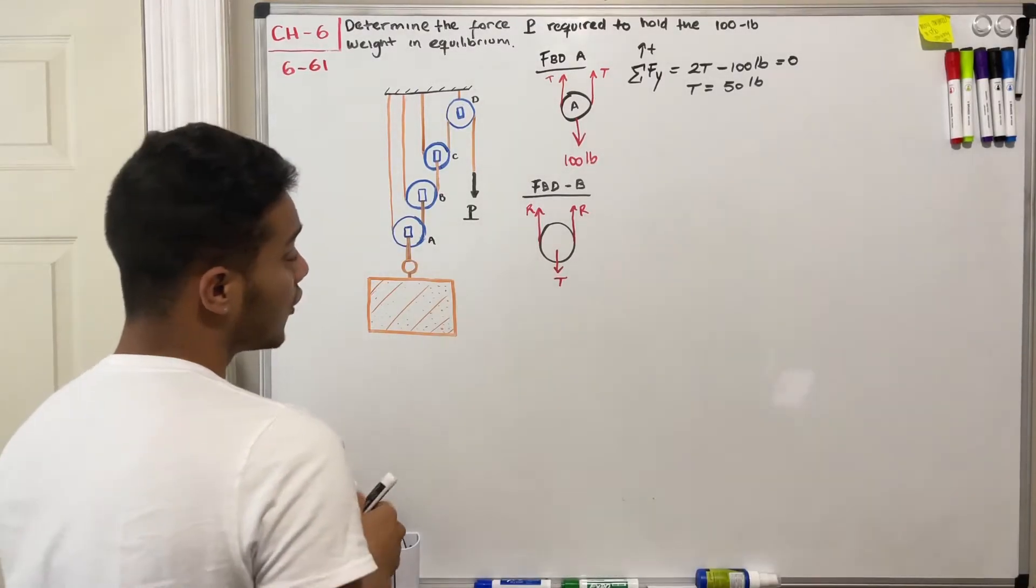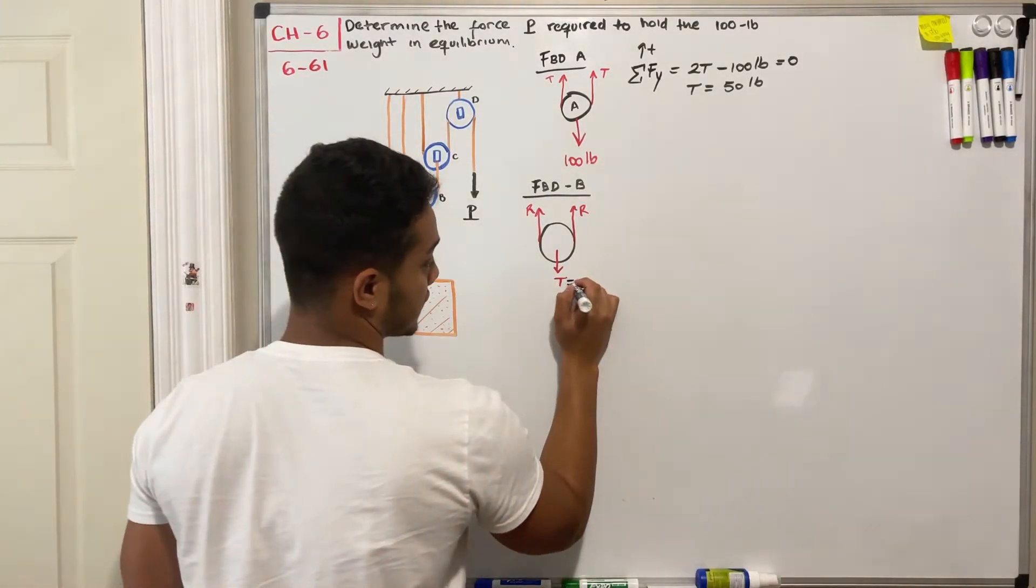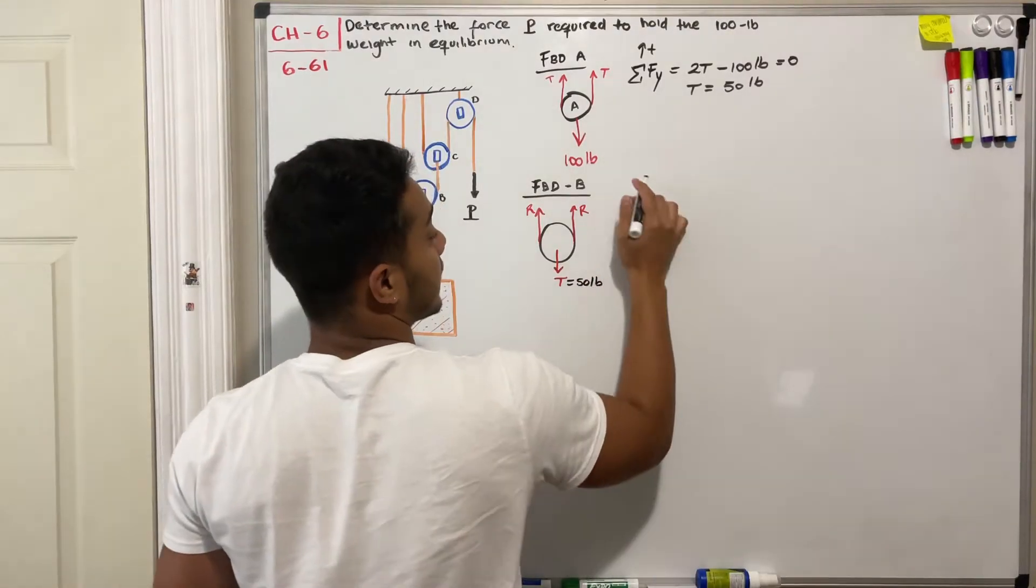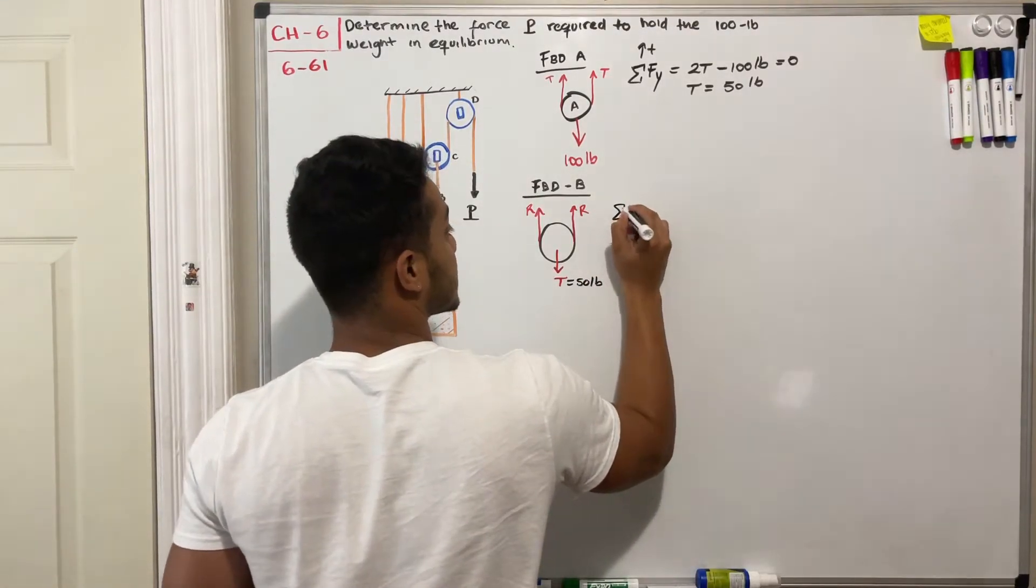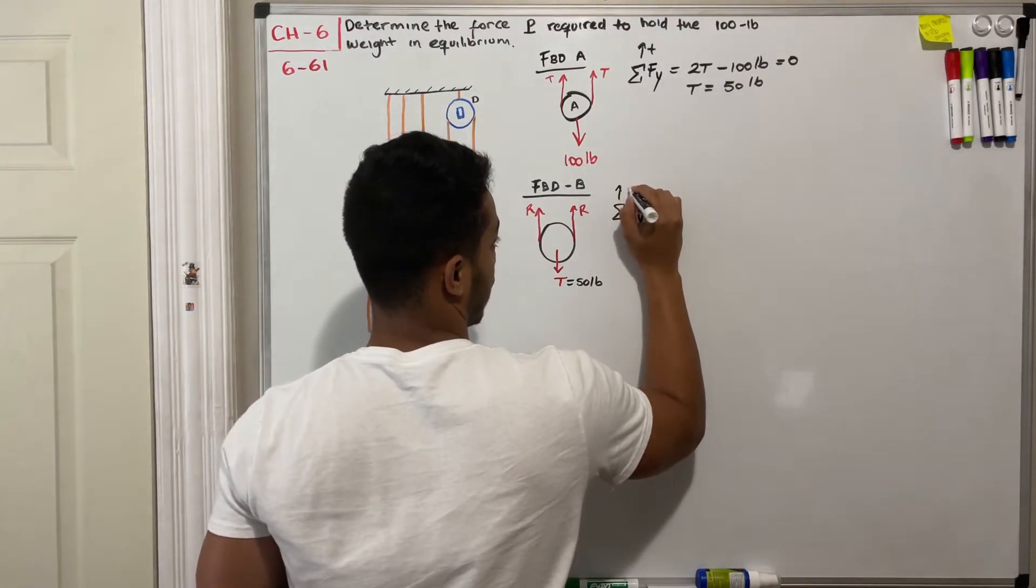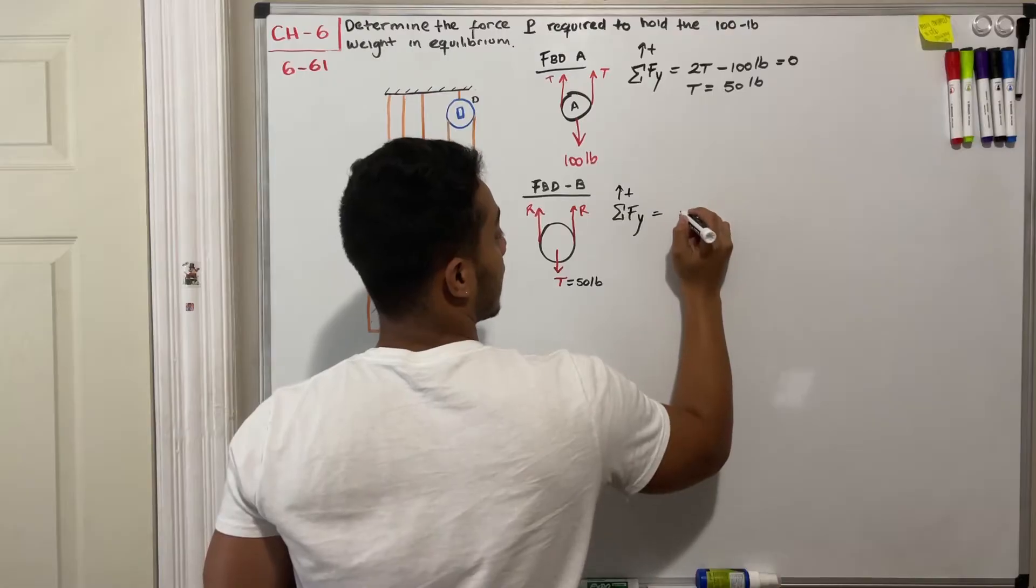Now we know the value of T which is equal to 50 pounds. We can apply again the sum of forces in the y direction, assuming that going up is positive.